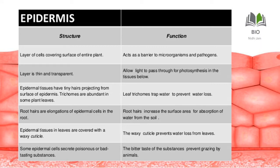The functions of epidermis are: it acts as a barrier to microorganisms and pathogens from outside. It allows light to pass through for photosynthesis in the tissue below. Leaf trichomes trap water to prevent water loss. Root hairs increase surface area for absorption of water from the soil. The waxy cuticle prevents water loss from leaves. Bitter or poisonous substances secreted by epidermal cells prevent grazing by animals — browsing animals cannot eat the plant.